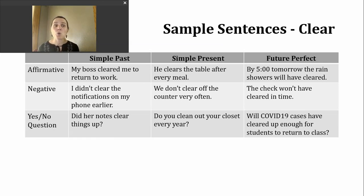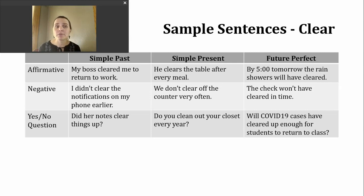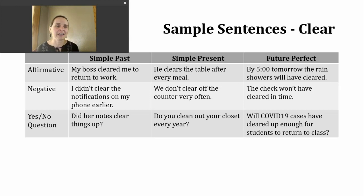Next, let's look at future perfect. To make this verb tense, we're going to use "will," "have," and then the participle form of the verb — which happens to be the same as the past tense for this particular verb. Here's an example sentence: "By 5 o'clock tomorrow, the rain showers will have cleared." Just another way to say it's going to stop raining by 5 o'clock.